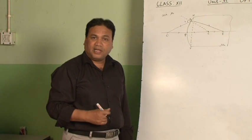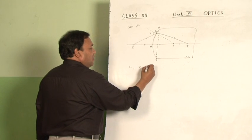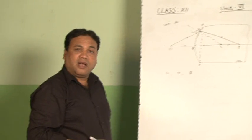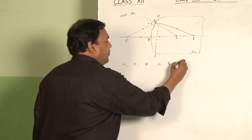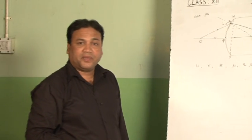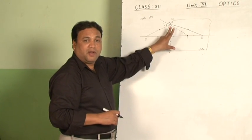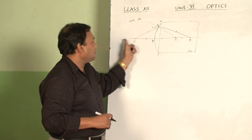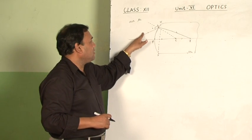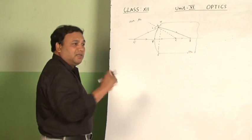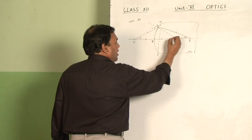For this, I have to derive a relation between the object distance u, image distance v, radius of curvature R, and the refractive indices mu 1 and mu 2. The assumptions are: the aperture is small, the object is point-sized and placed on the principal axis, and all the angles — made by the incident ray and refracted ray — are very small. I will label the angle at O as alpha, at image as beta, and at C as gamma.